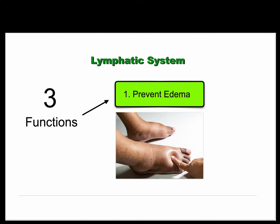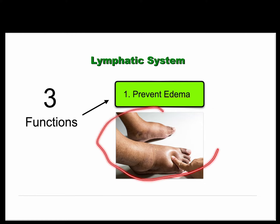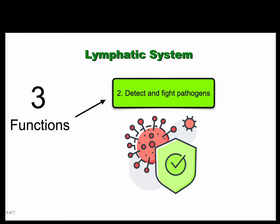The first function is that it prevents edema. Without the lymphatic system we would have an accumulation of fluid within the tissues, which is known as edema. The second function is that it detects and fights pathogens. The lymphatic system drains extra fluid from different parts of the body, and it passes through quality control centers called lymph nodes, where immune cells can recognize pathogens and initiate an immune response.